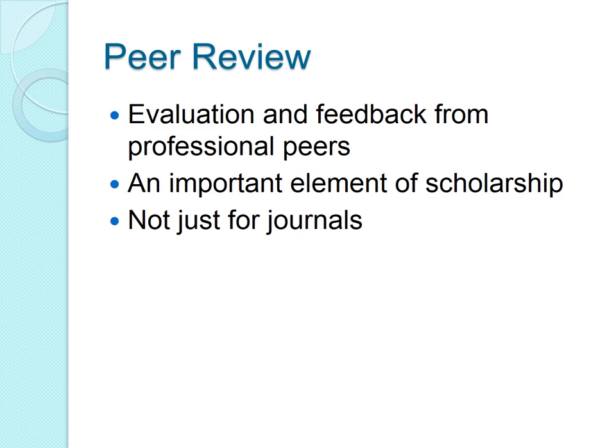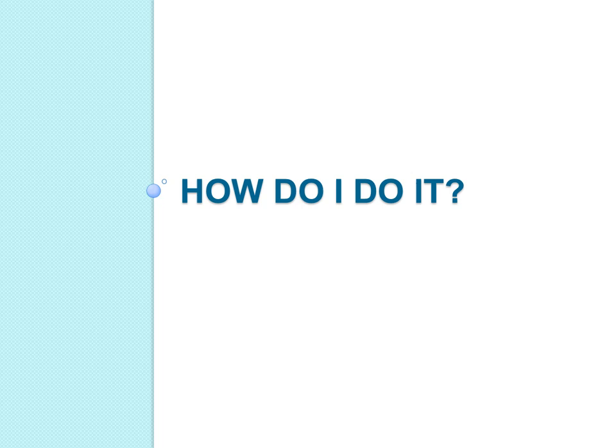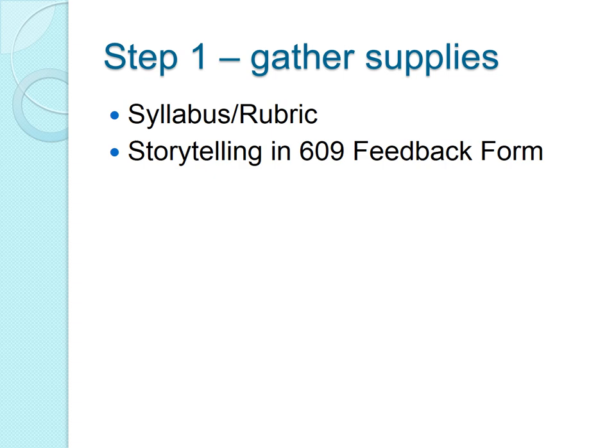So with that said, how do you do it? First, make sure you have all your supplies handy. When somebody is peer reviewing for a journal, they bring their own expertise and knowledge, but they also have the submission guidelines of that particular publication — and if there was a call for papers, those details too — because they need to know not only is this a good paper, but does it fit this journal? In your case, you're looking at whether it fits what was requested and what it will be graded on. So you want to have your syllabus or at least the rubric from Blackboard handy.